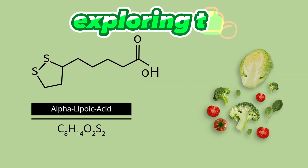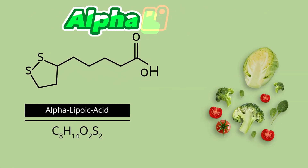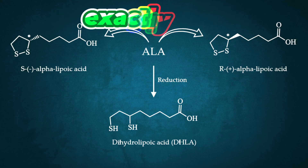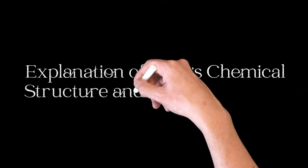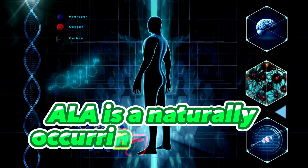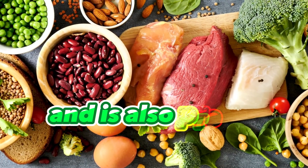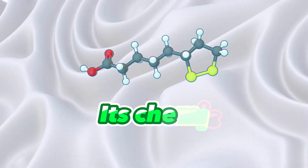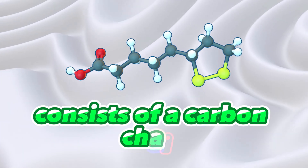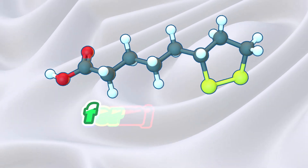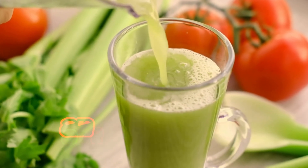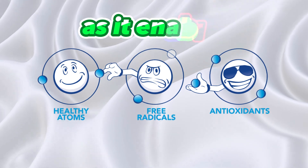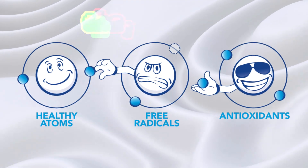Let's begin by exploring the fascinating world of alpha lipoic acid, or ALA. ALA is a naturally occurring compound found in our bodies and also present in certain foods. Its chemical structure consists of a carbon chain with two sulfur atoms at one end, forming what is known as a thiol group. This thiol group is crucial for ALA's antioxidant activity, as it enables ALA to neutralize harmful free radicals that can damage our cells.